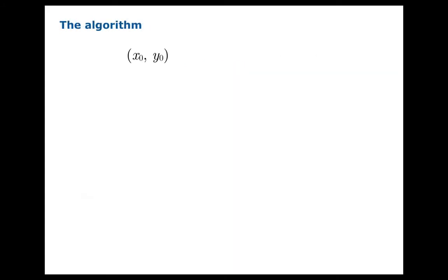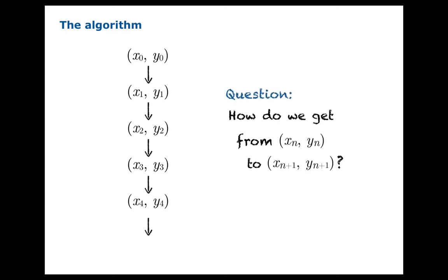So the algorithm allows us to crank out these points in theory. And the question is, how do we actually do this? How do we go from a point xn comma yn to the next one in line?